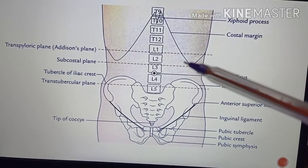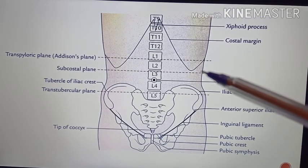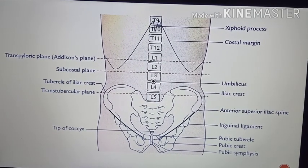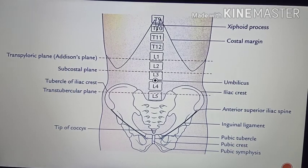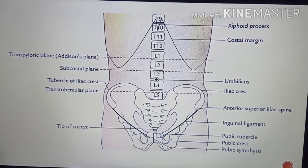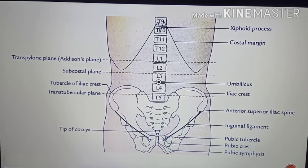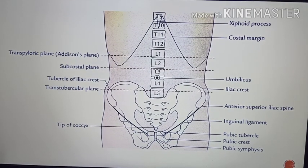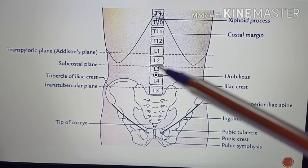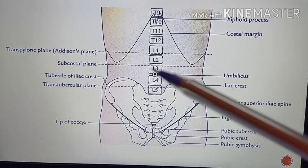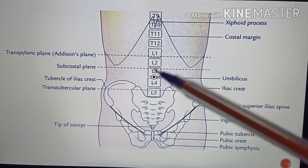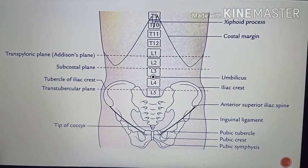Here you are having the ribs and costal margin, so it is passing just below the costal margin. It passes anteriorly to the lowest border of the costal cartilages of the 10th rib, and posteriorly to the body of the L3 vertebra.